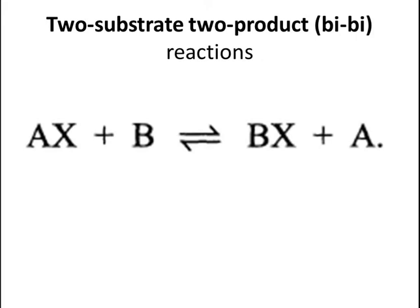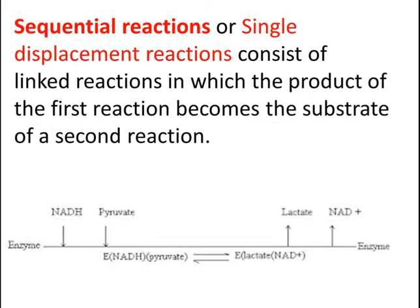The two-substrate two-product bi-bi reactions are often transfer reactions of one type or another, including oxidation-reduction reactions, and can be best represented as AX plus B gives BX plus A. These reaction mechanisms may be sequential or non-sequential.